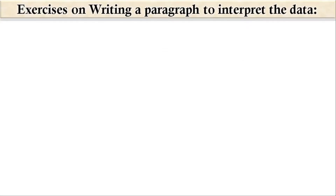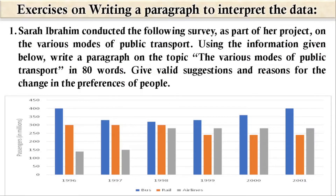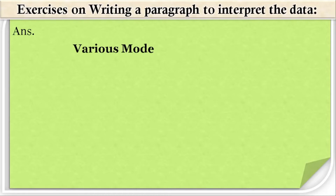Now let's come to the exercises. The first question involves writing a paragraph to interpret data — this kind of question will be tested in BSC or BCA first semester question papers. The question: Sarah Ibrahim conducted the following survey as part of her project on the various modes of public transport. Using the information given below, write a paragraph on the topic 'Various Modes of Public Transport' in 80 words, giving valid solutions and reasons for a change in people's preferences.